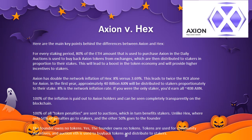Unlike HEX, where only 50% of penalties go to stakers and the other 50% goes to the founder — in Axion, the founder owns no tokens. Yes, the founder owns no tokens. Tokens are used for community incentives, and auction fees are used to buy back tokens and distribute to stakers.